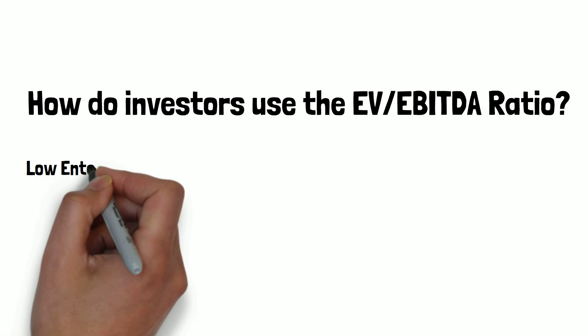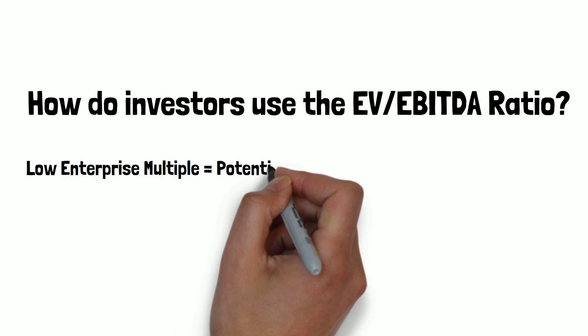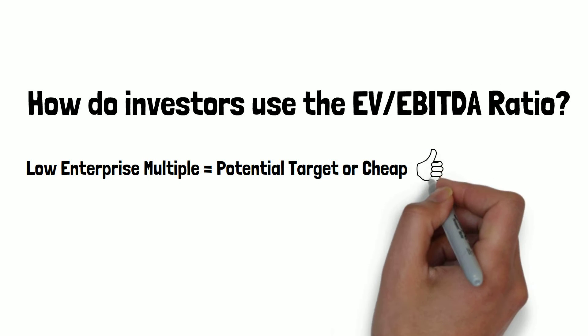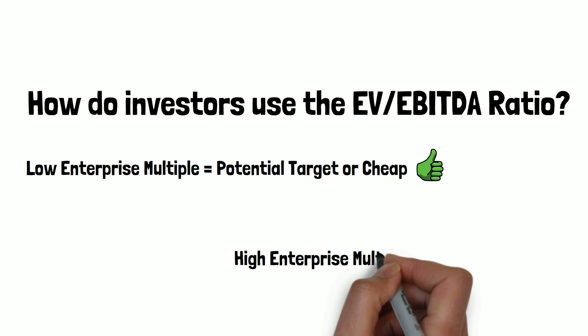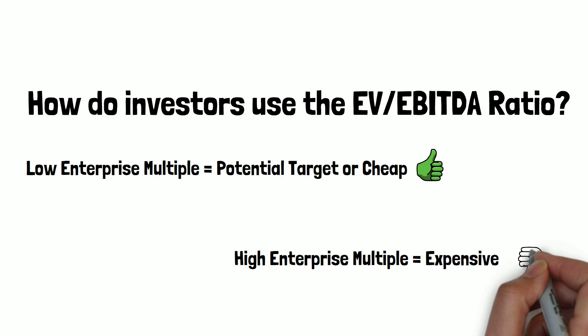How do investors use the EV to EBITDA ratio? A low enterprise multiple signals that a company may be a strong candidate for potential acquisition, or that it's trading at a cheap valuation relative to its current EBITDA. Whereas a high enterprise multiple may indicate that a company is expensive relative to its current EBITDA.